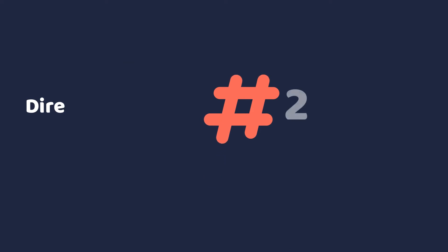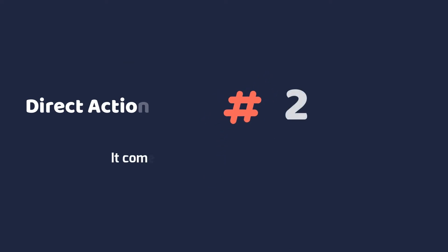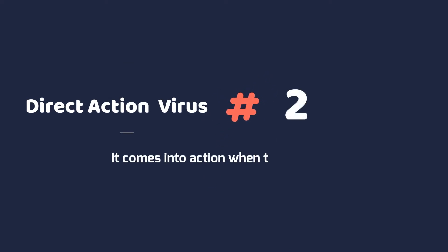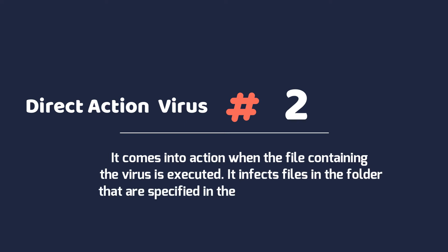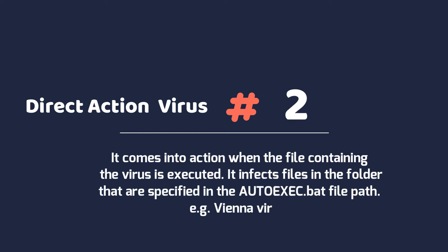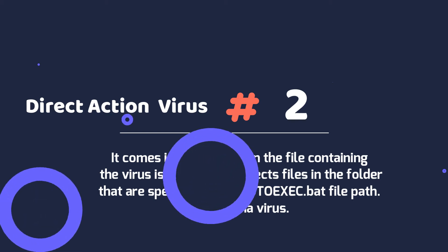2. Direct action virus. It comes into action when the file containing the virus is executed. It infects files in the folder that are specified in the autoexec.bat file path. For example, Vienna virus.